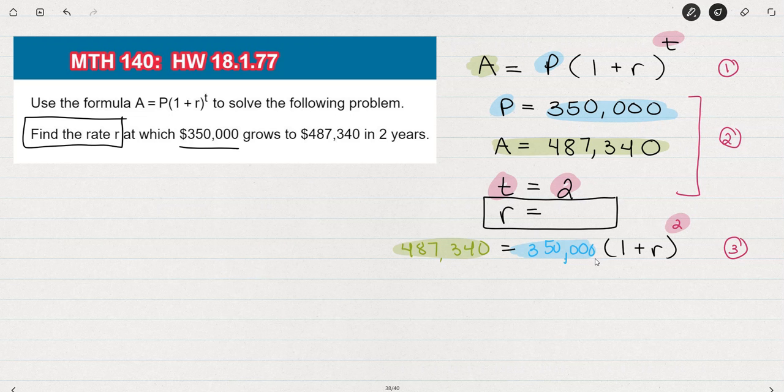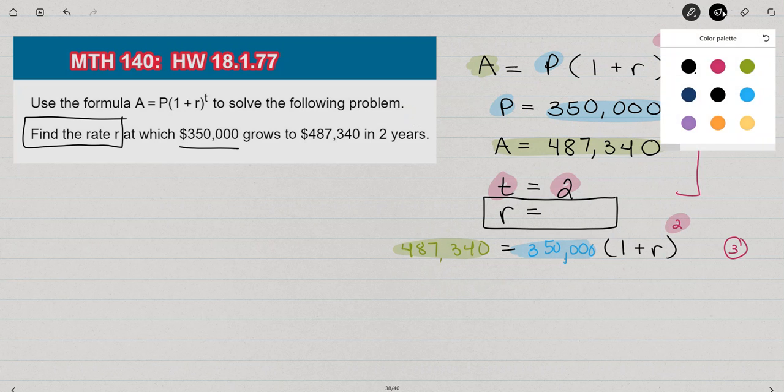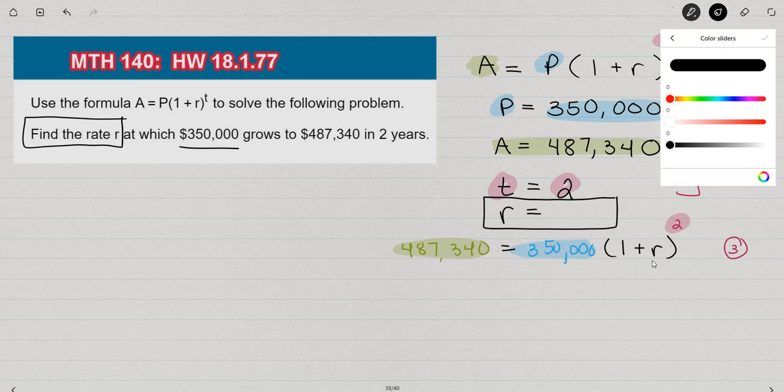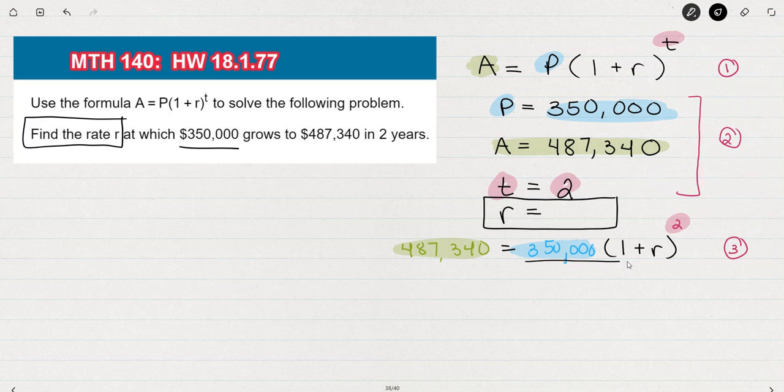All right, well, we're all ready to solve our equation for the rate. To do that, I'm going to start by getting rid of this $350,000 because I want to isolate the rate, the R. So I'm going to divide by $350,000. And so I'm going to have to do that to the other side also. So I'll divide both sides by $350,000.